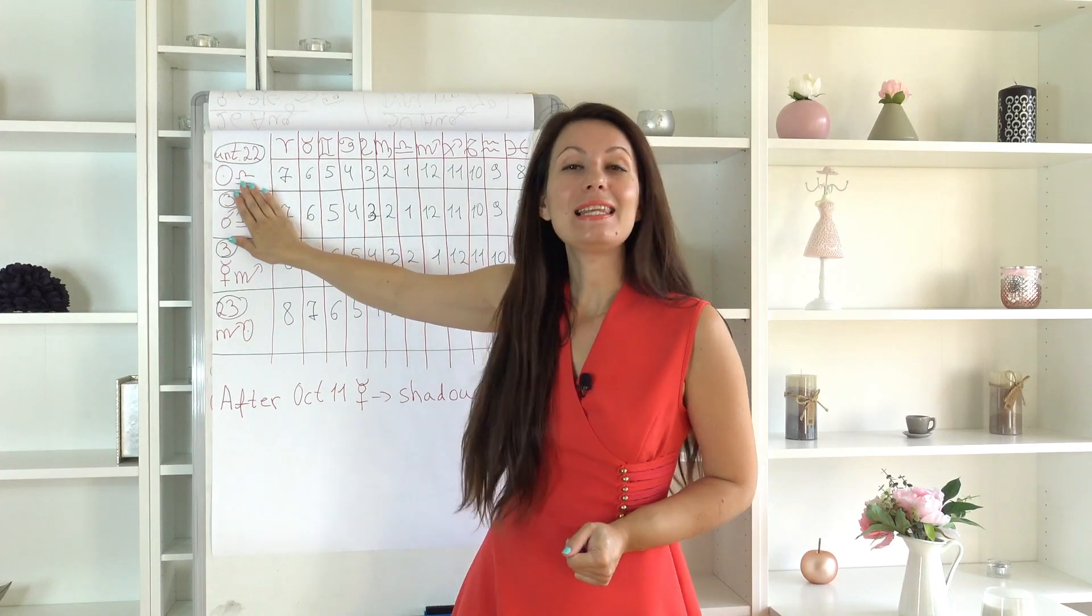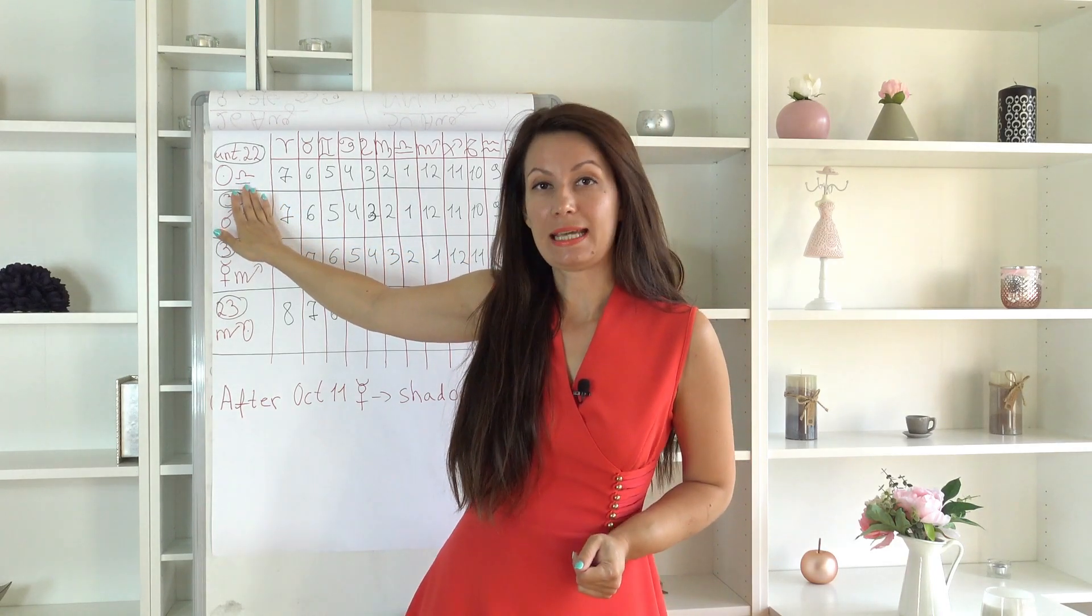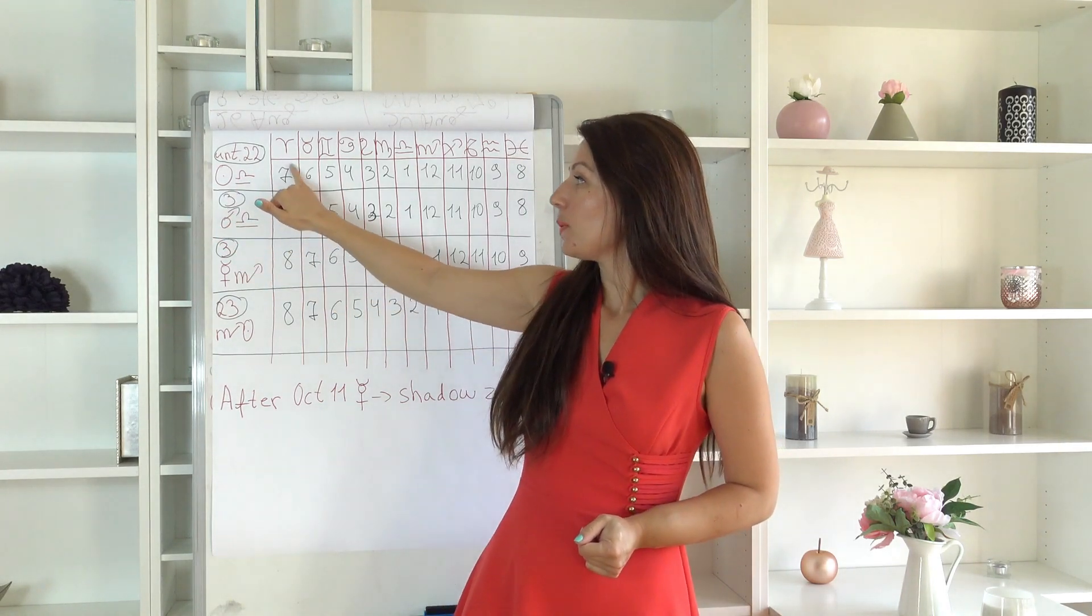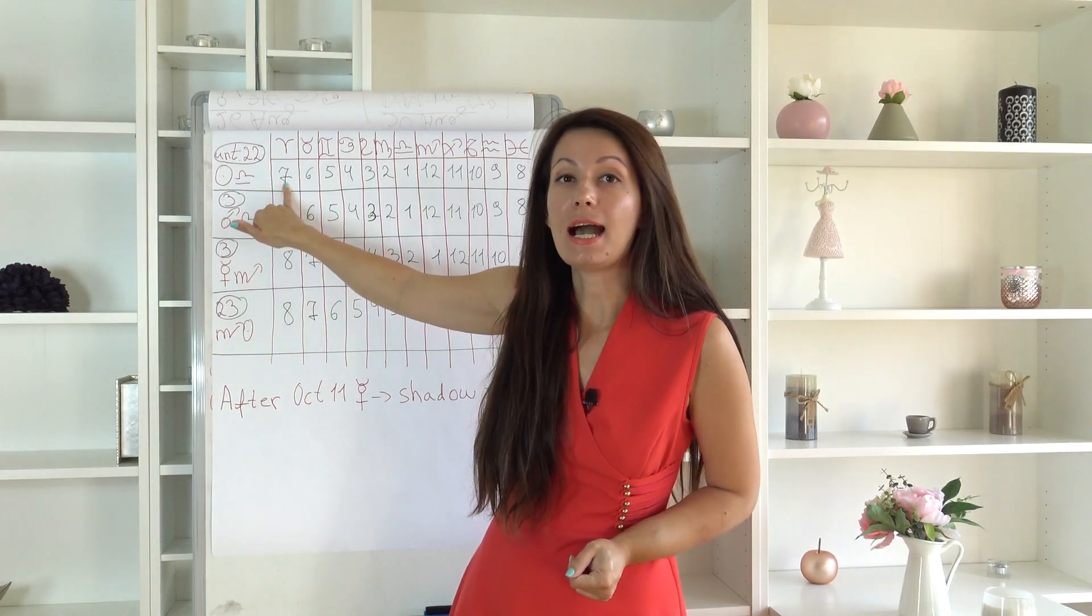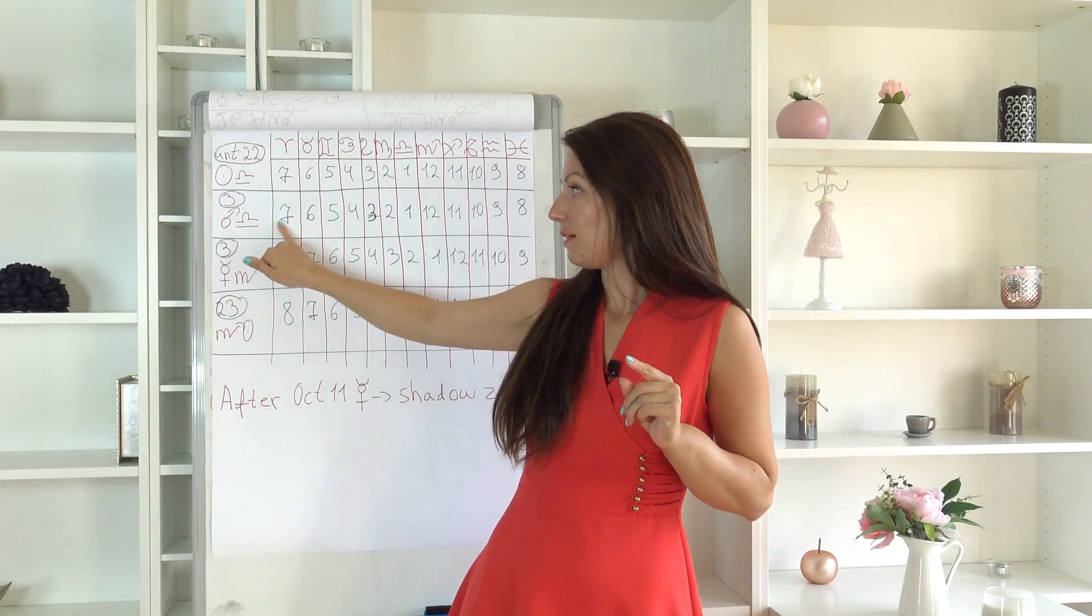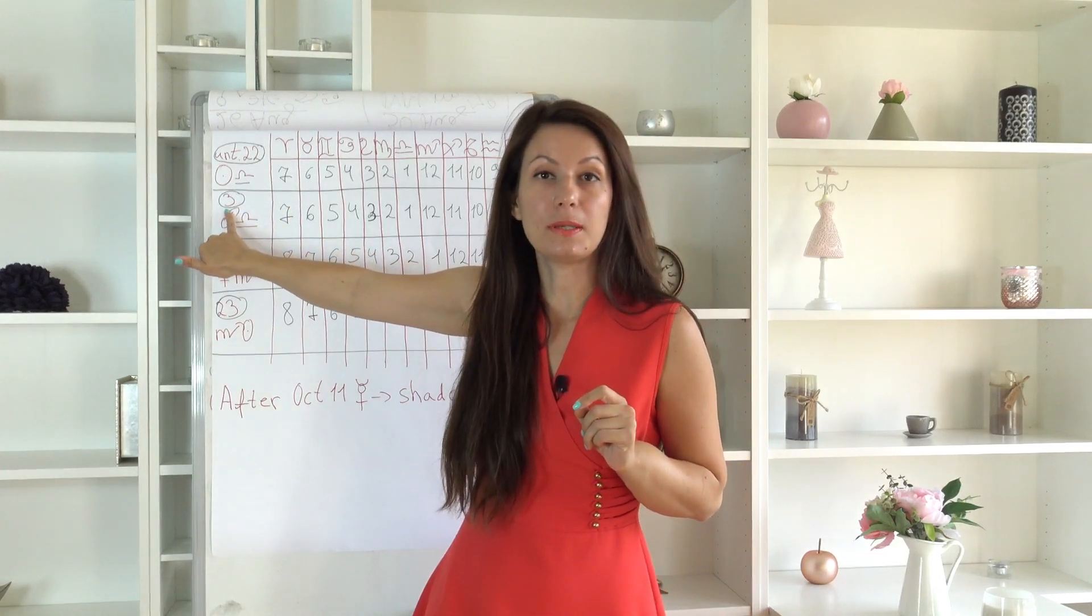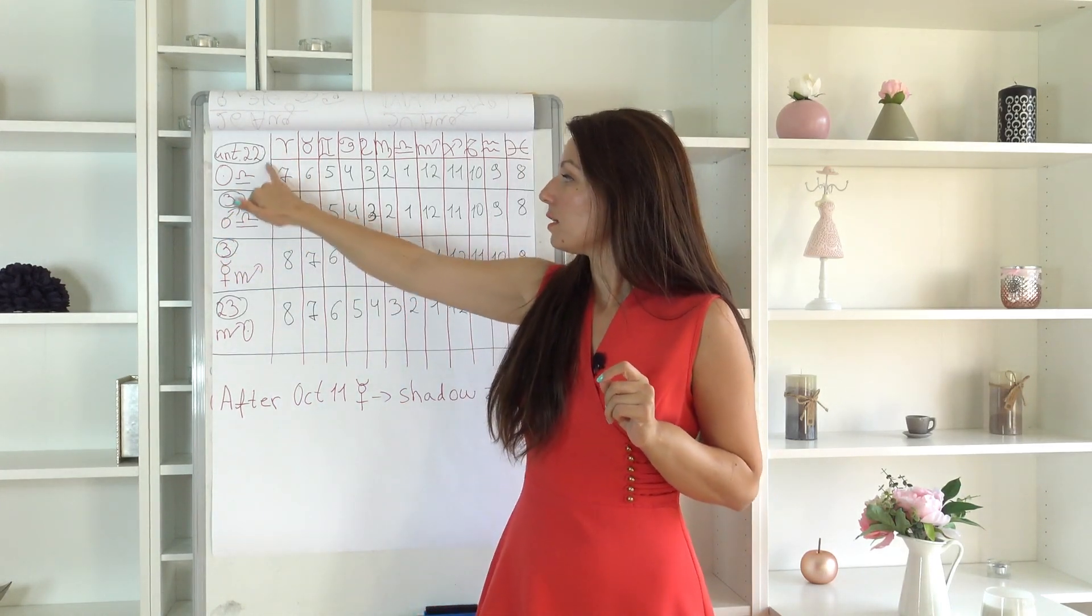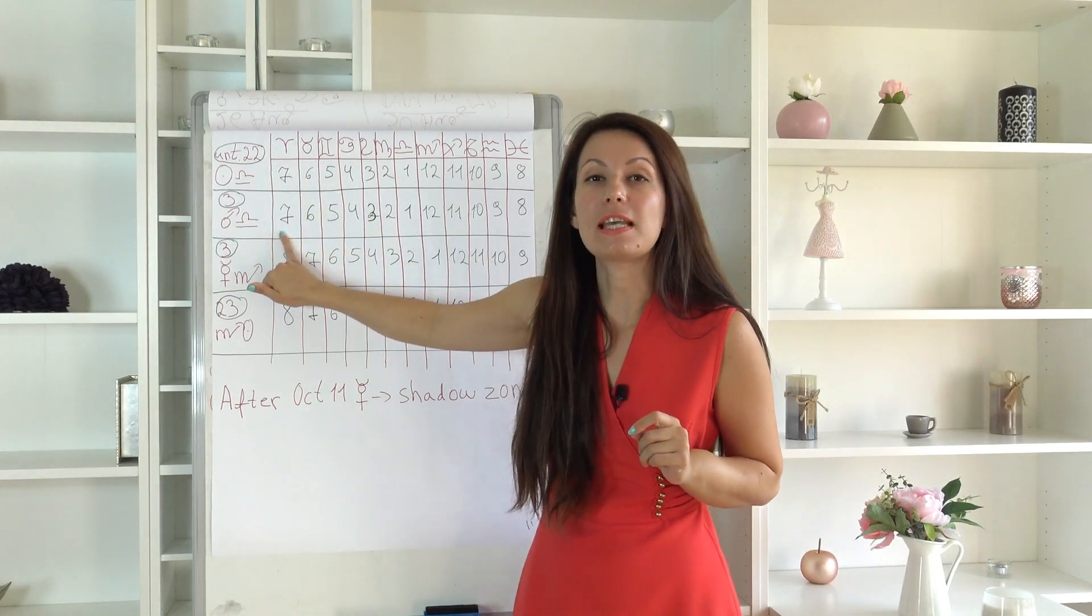We have the Sun in Libra until the 22nd of the month, which will activate your 7th house. On top of that, Mars will ingress in your 7th house after the 3rd of the month. So there is lots of action here in your 7th house.